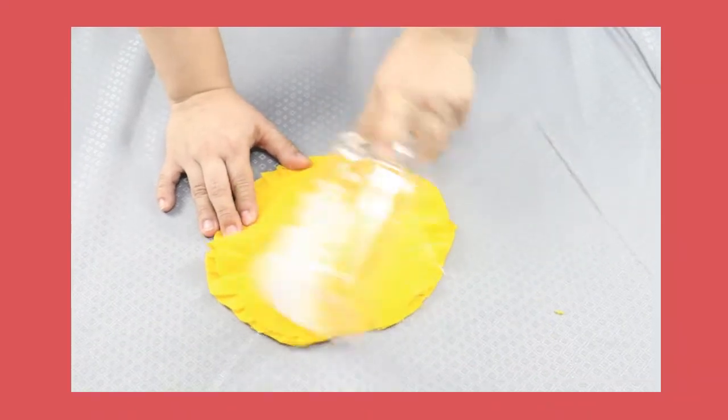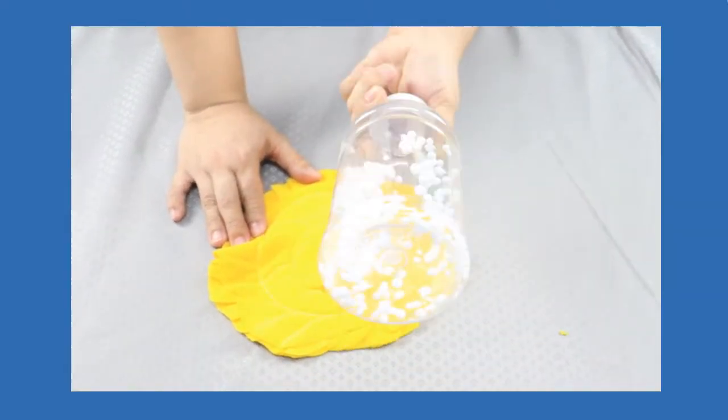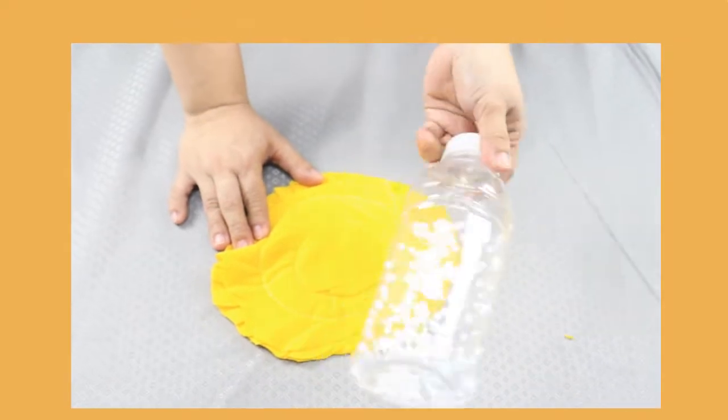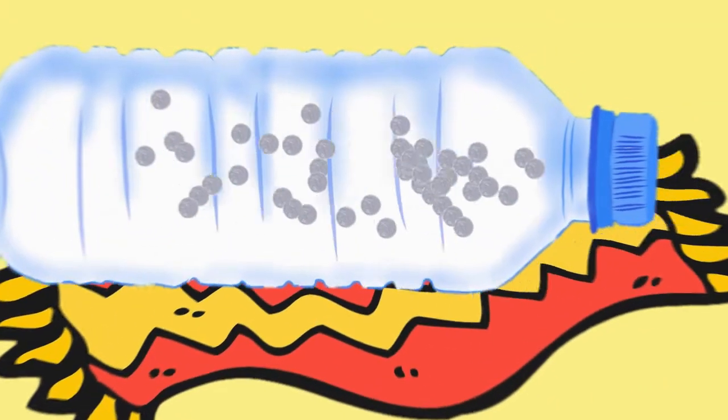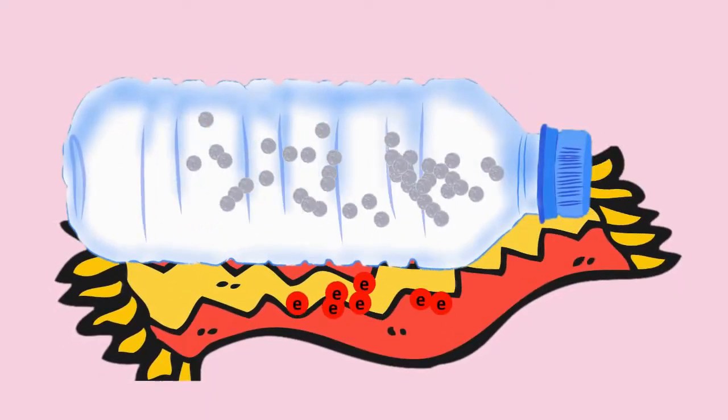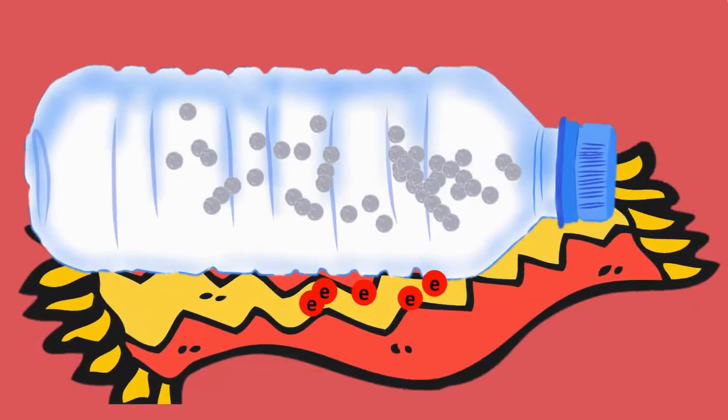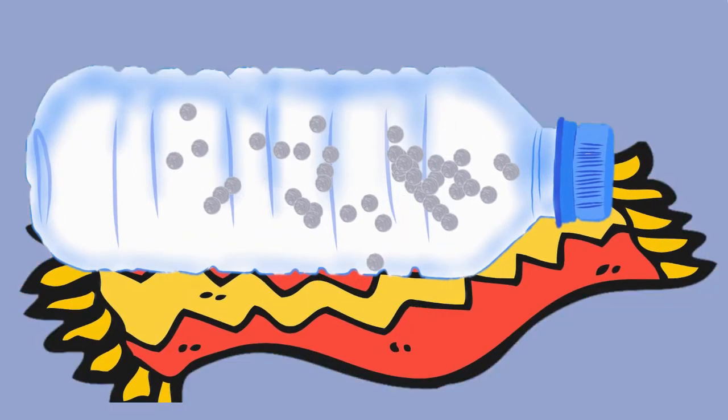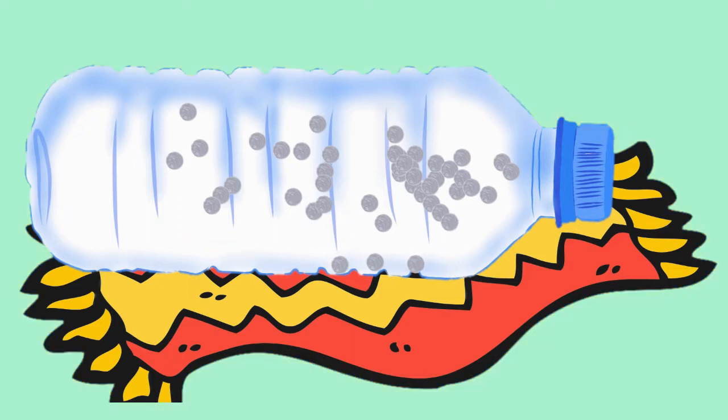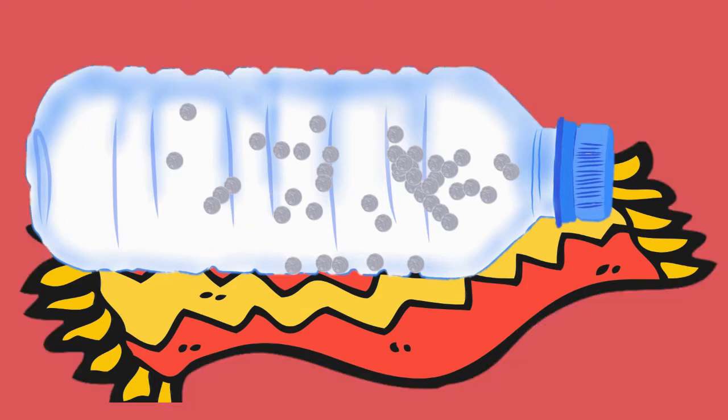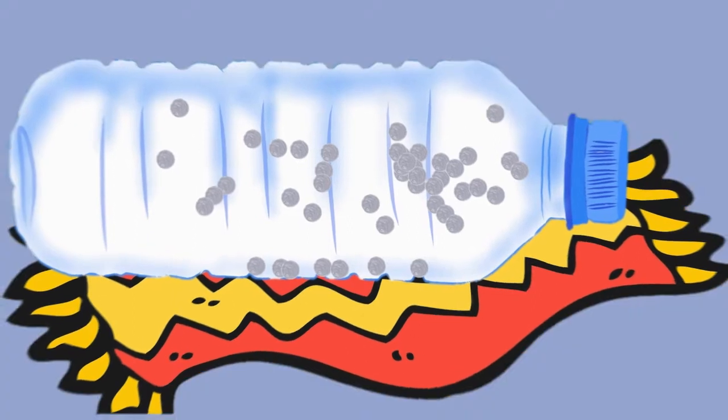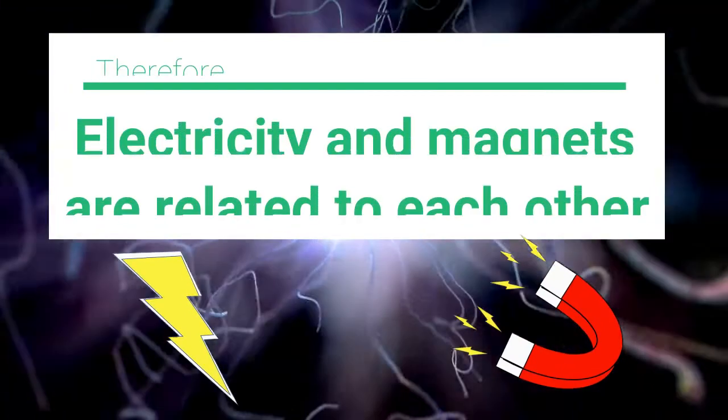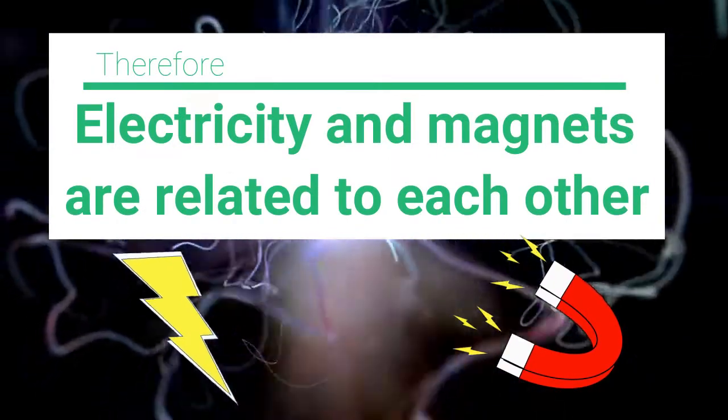While rubbing the plastic bottle with a piece of cloth, the electrons transfer from one material to another. That's stored in one material. That material produced electricity and caused some material attracted to the plastic bottle because of electrons, just like a magnet that attracts metals. Therefore, electricity and magnets are related to each other.